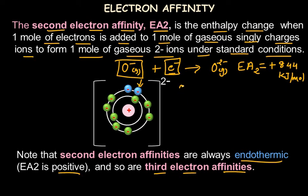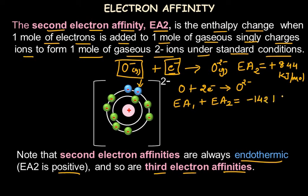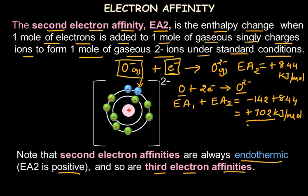If we calculate the overall energy change for adding two electrons to an atom of oxygen — turning it into a 2-minus oxygen ion — we add the first and second electron affinity values: −142 + 844 = +702 kJ/mol. This shows that the overall process of converting one mole of oxygen atoms to one mole of O²⁻ ions is endothermic, with a value of +702 kJ/mol.